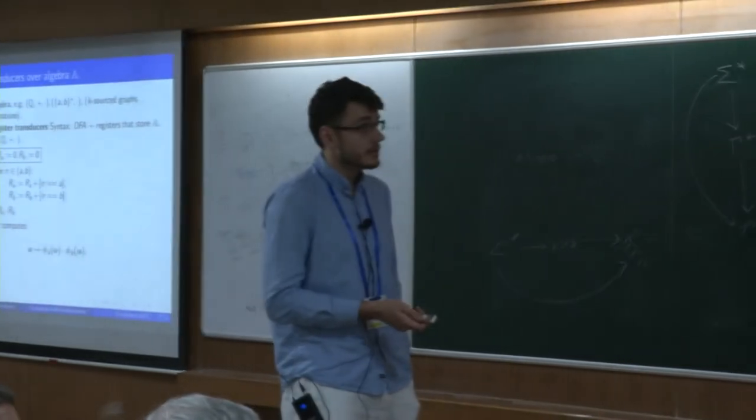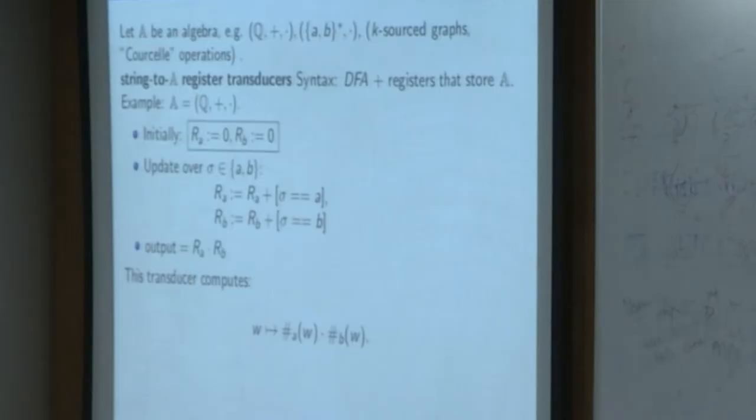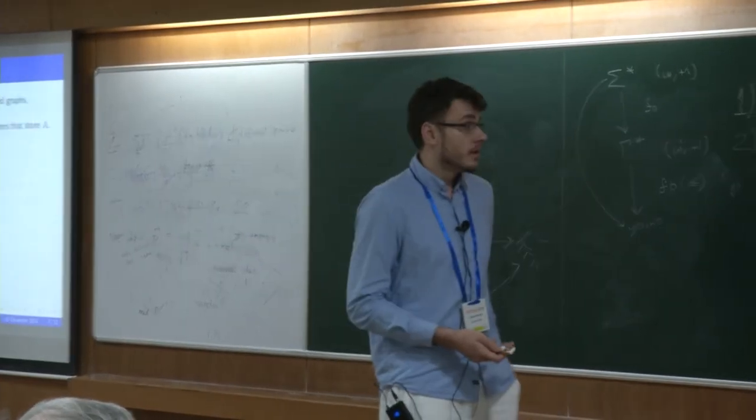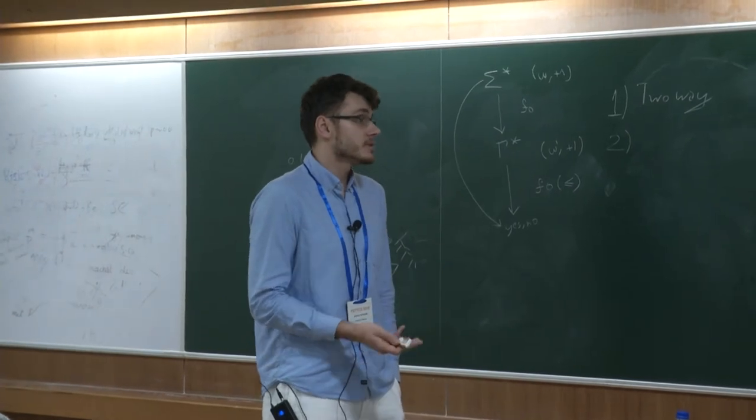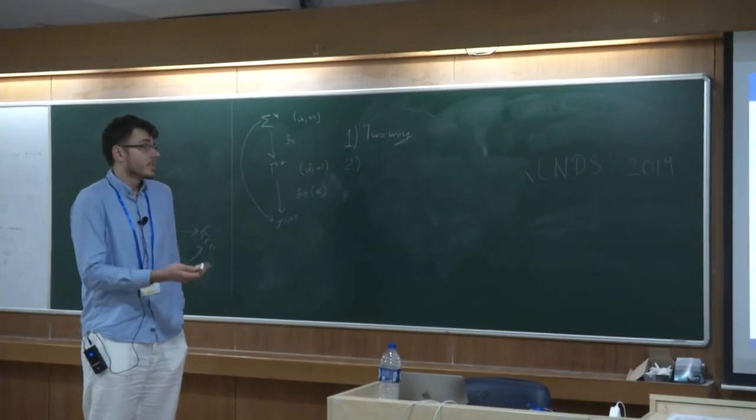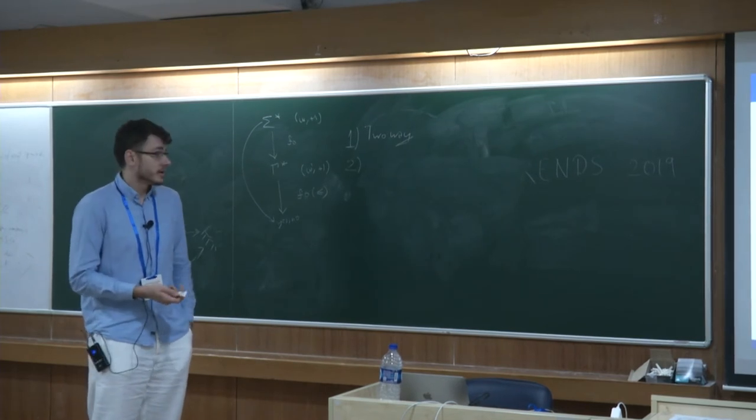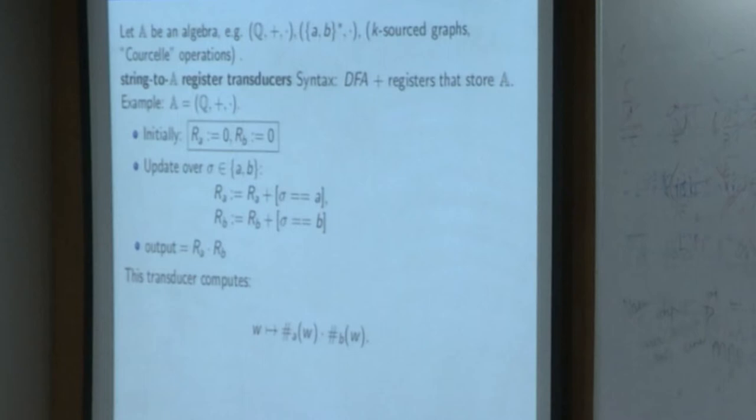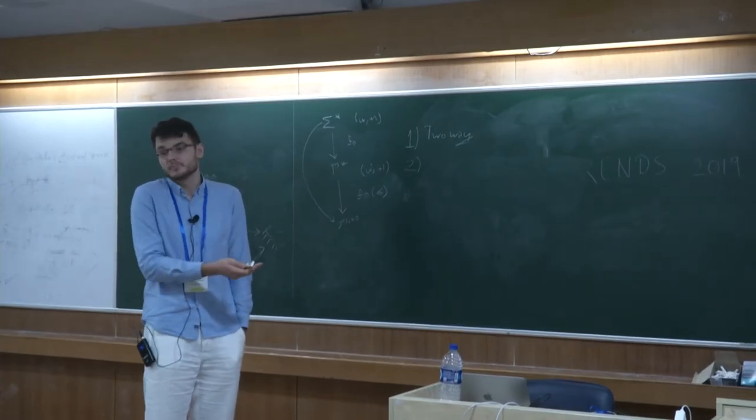So what is a register transducer? Very generally, any algebra—a field of rational numbers, or maybe a monoid of words, or an algebra of source graphs that we will be using. A string to A register transducer is essentially a deterministic finite automaton additionally equipped with registers that store A. In an example, let's say we have two registers initiated to zero, and after each letter they add one if and only if it was an A, or add one to the other register if B was read. The output function is multiplication of the registers. So it's easy to see that such a transducer computes the number of A's in the word multiplied by the number of B's.